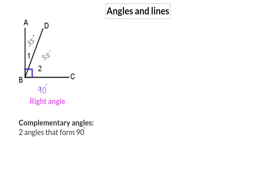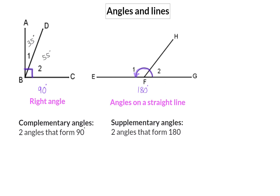Next up we had a look at angles on a straight line. Angles on a straight line always add up to 180 degrees. And two angles that add up to 180 are called supplementary angles.